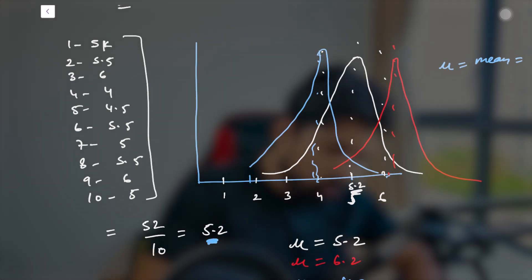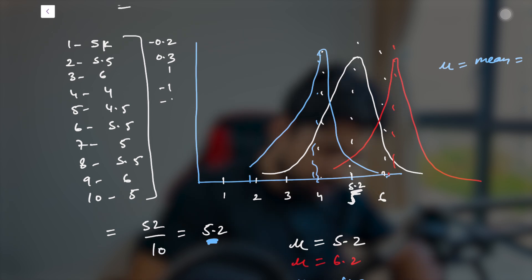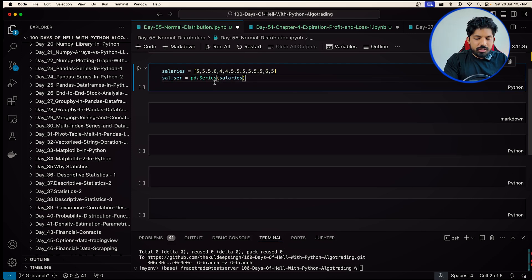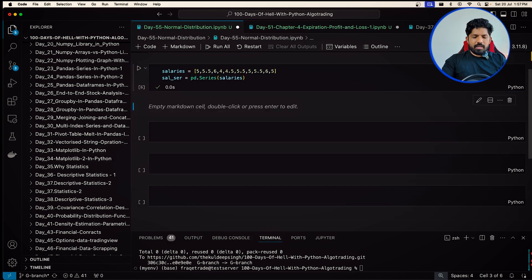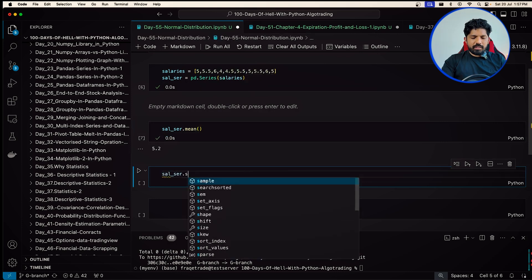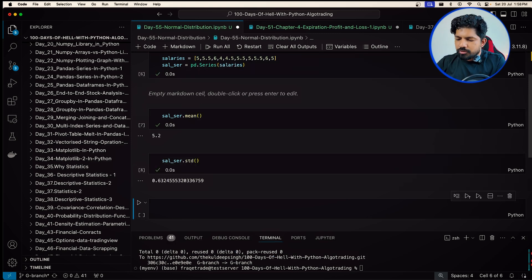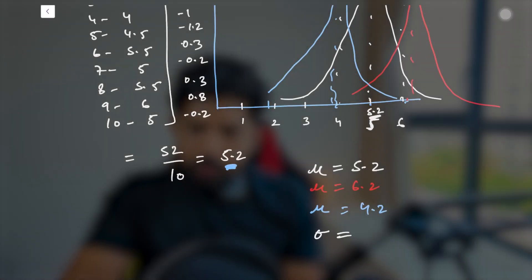Now let's find the standard deviation. We subtract the mean from each value. Using Python, I'll quickly create a series and calculate: salary series dot mean gives 5.2, which is correct. And salary series dot std gives 0.632. So the standard deviation is 0.632.